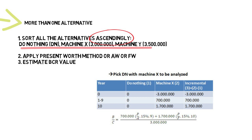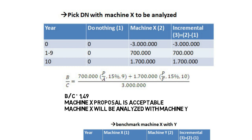In the first iteration we pick Do Nothing versus Machine X. We build a cashflow table consisting of columns for: year, Do Nothing, Machine X cashflow, and incremental analysis. The incremental cashflow is obtained by subtracting the Do Nothing cashflow from the Machine X cashflow.